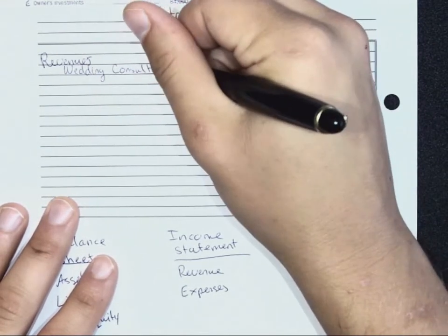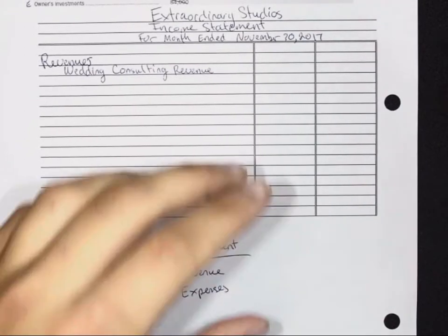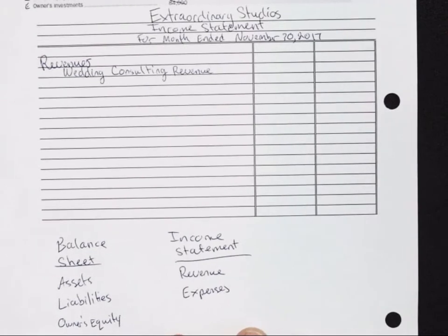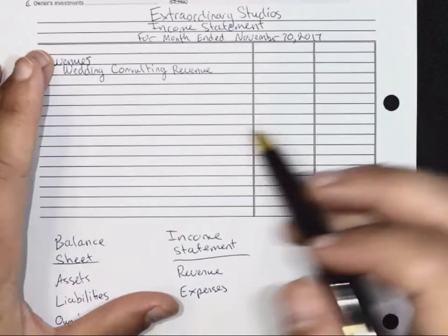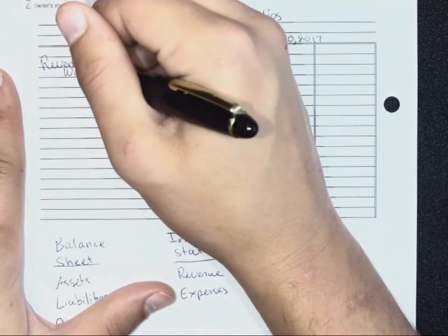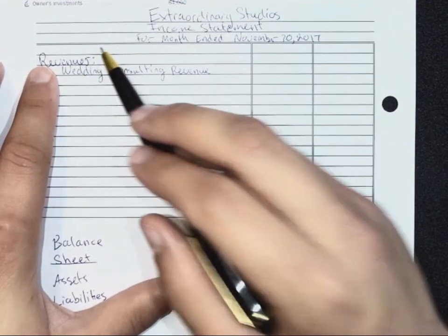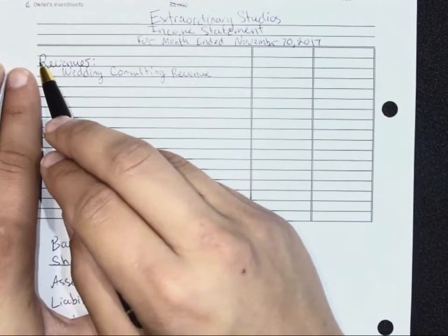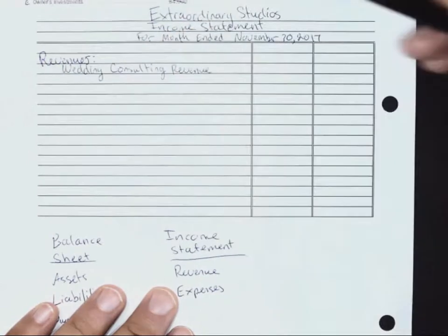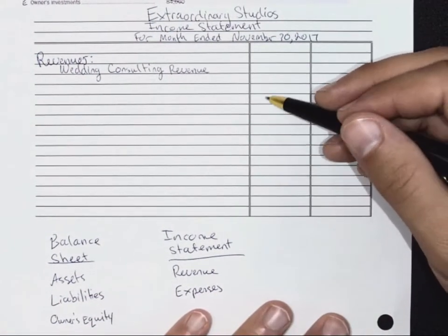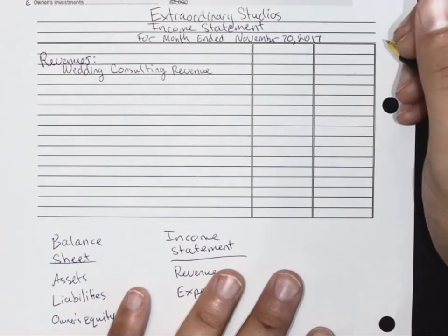The most you'll see is three columns on a financial statement. Right now we have a two-column statement, and you do need to use both of them. 'Revenues' is a category heading — it's not an actual account. Wedding consulting revenue is the account; revenues is just a subtitle. Category headings go on the left, accounts are indented, individual amounts go in the left column, and totals go in the right column. We only have one revenue account, so wedding consulting revenue of $22,000 goes directly to the right column.